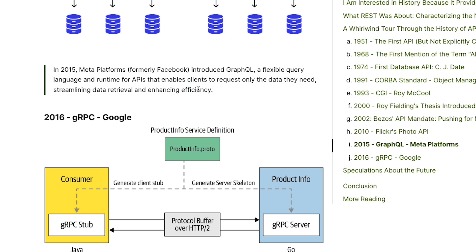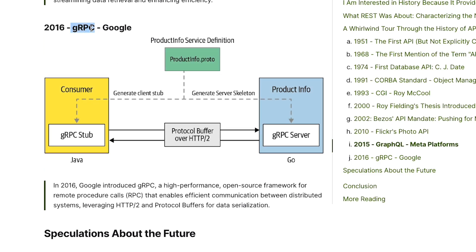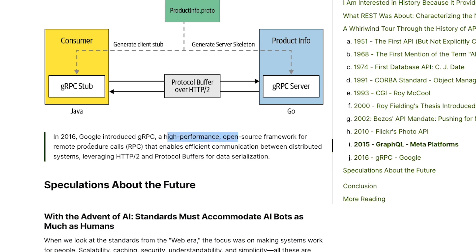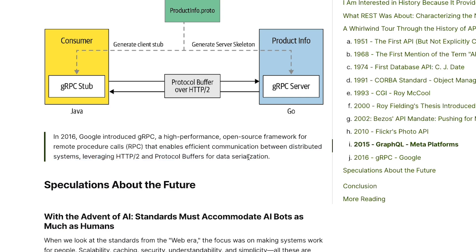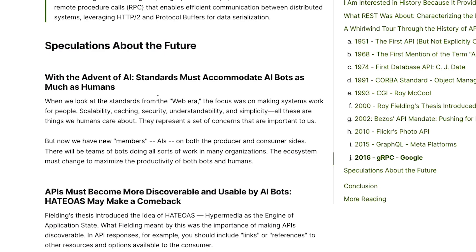We are now 100% REST — well, not exactly REST, it's an internal system of our own, but it's not GraphQL. In 2016, Google introduced gRPC, a high-performance open-source framework for remote procedure calls (RPCs), which enables efficient communication between distributed systems, leveraging HTTP/2 and protocol buffers for data serialization. Because it doesn't use plain text, data transfer is much more efficient — it's popular among people who want to connect systems in a high-performance way.